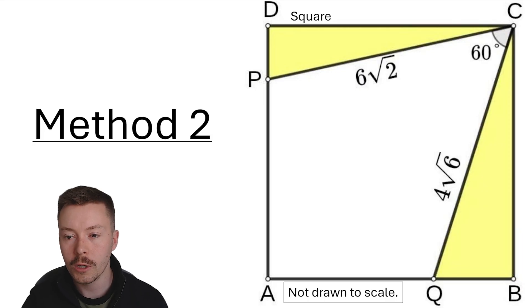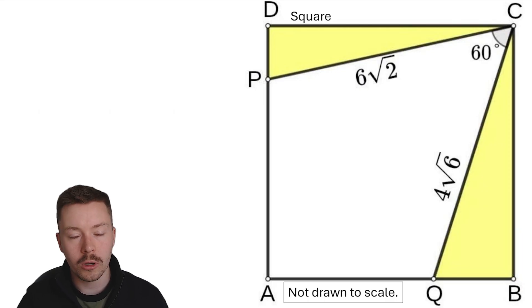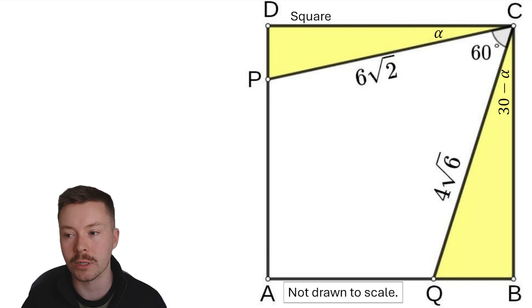Method 2 is, we've got these same angles again, alpha and beta, and I'm going to go through the same process as before. Beta is 90 minus 60 minus alpha, so that's the same as 30 minus alpha.